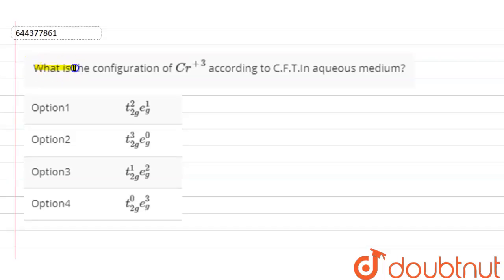The question is, what is the configuration of chromium plus 3 according to crystal field theory in aqueous medium?